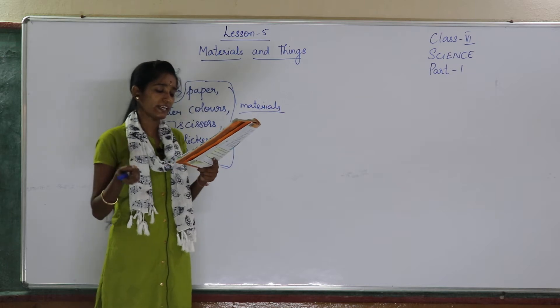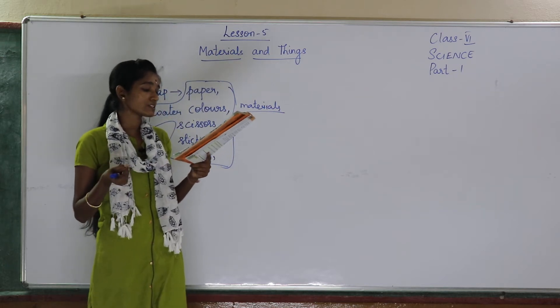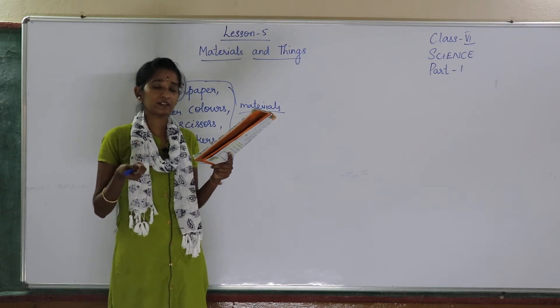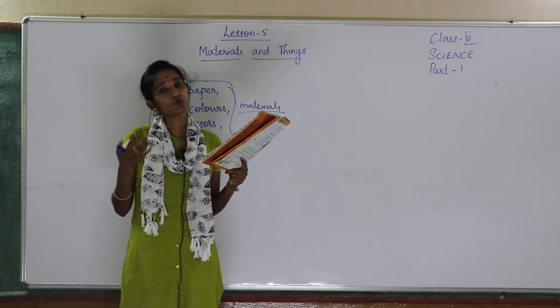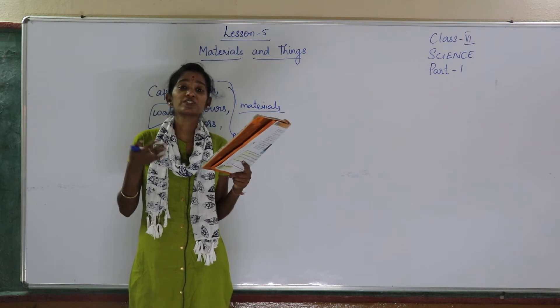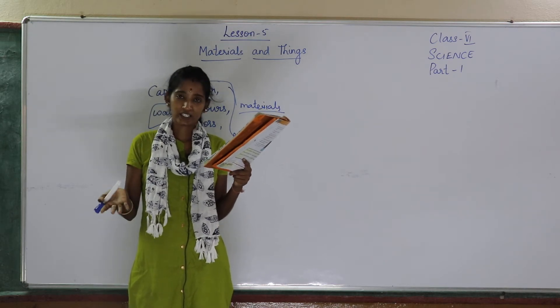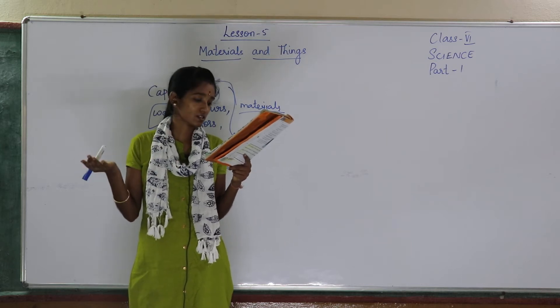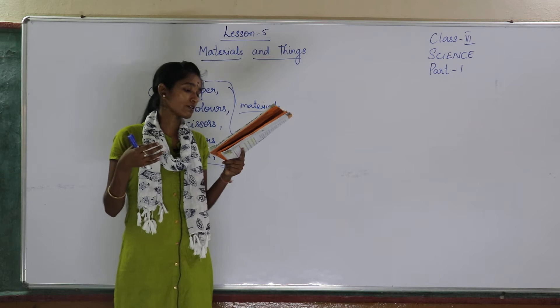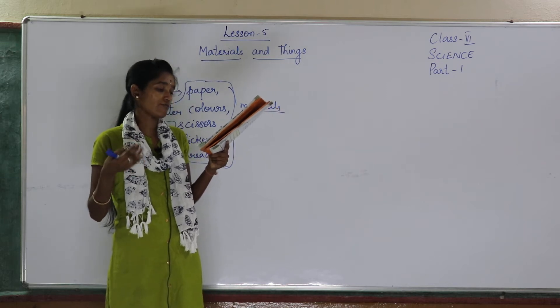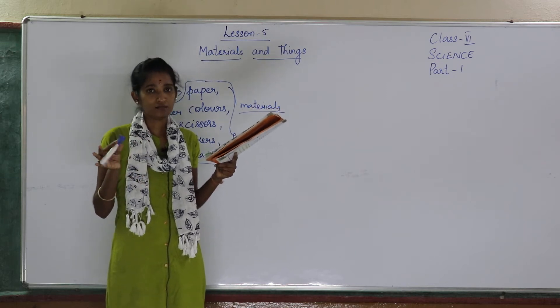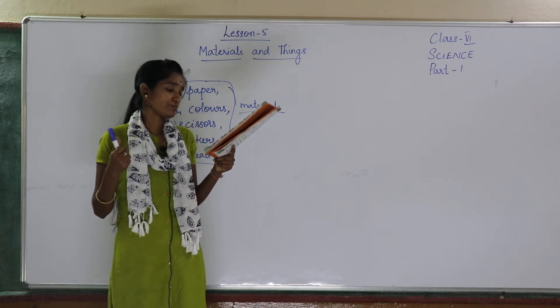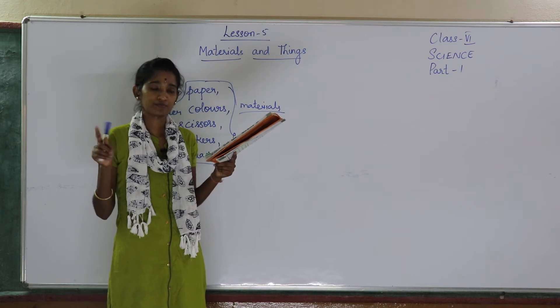Now in our day to day life we use several things for different activities, different different things which are made up of different materials. For example, body of your pen is made up of plastic, means a pen is made up of plastic. Whereas its clip, it is made up of metal, iron.